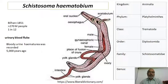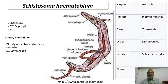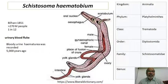Schistosoma haematobium is the blood fluke which lives in the pelvic veins of human beings and was discovered by the notable scientist Bilharz in the year 1851. This disease is a very much neglected disease in the tropical region and more than 270 million people are suffering from it — that means one in every 12 persons suffers from Schistosomiasis. It is called the urinary blood fluke because it causes bleeding in urine, a manifestation called hematuria, which was detected by Egyptians and recorded 5000 years ago.